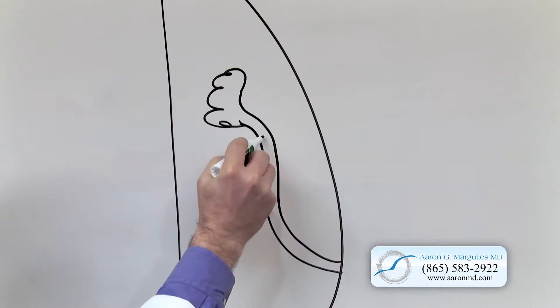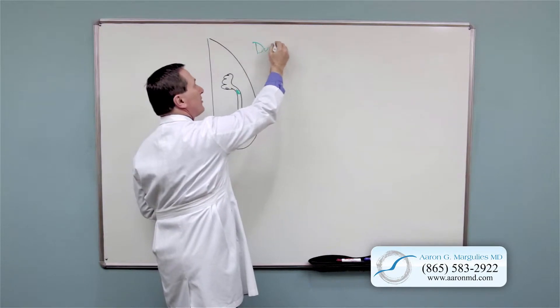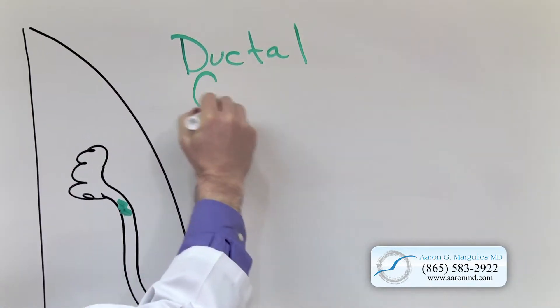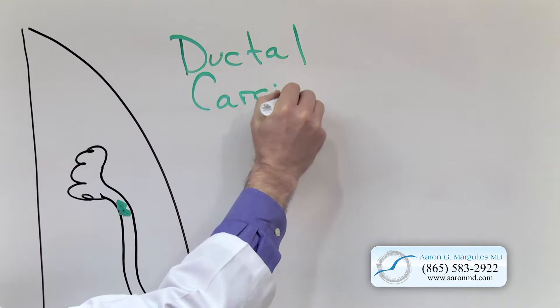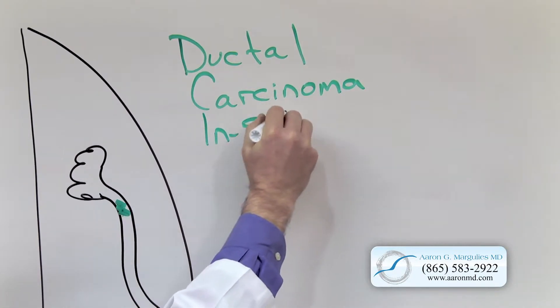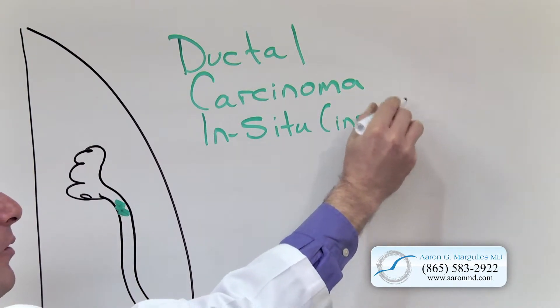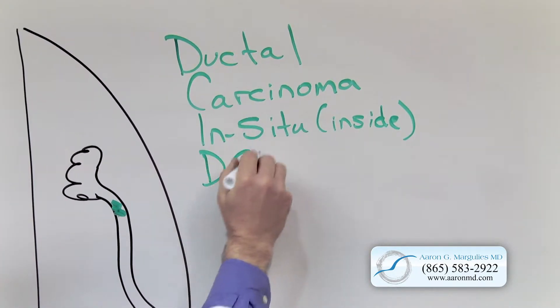When the cells turn cancerous and stay inside the duct, that is what we commonly refer to as ductal carcinoma in situ, where in situ just means inside. This is what we call DCIS.